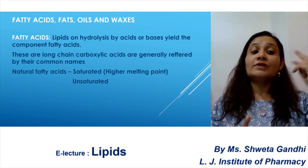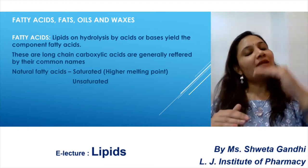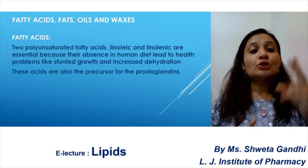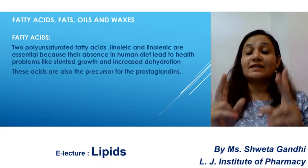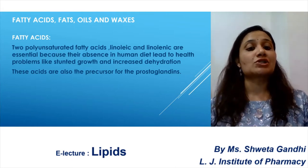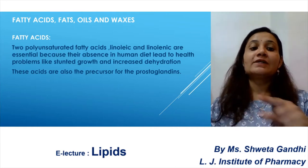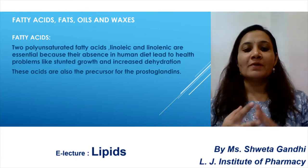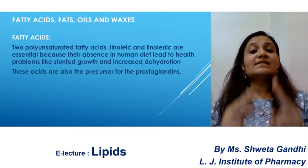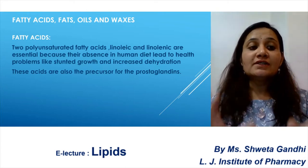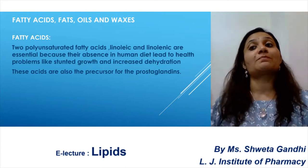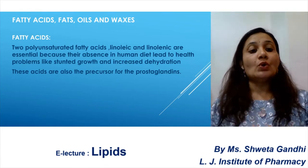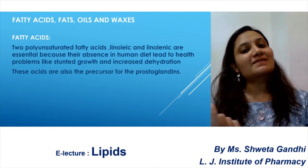Fatty acids on hydrolysis are long-chain carboxylic acids. Naturally, fatty acids are of two types: saturated and unsaturated. Saturated have a higher melting point. The two polyunsaturated fatty acids — linoleic and linolenic — are essential because their absence in the human diet leads to health problems. These fatty acids are the precursor for prostaglandins; precursor means starting material for their synthesis.